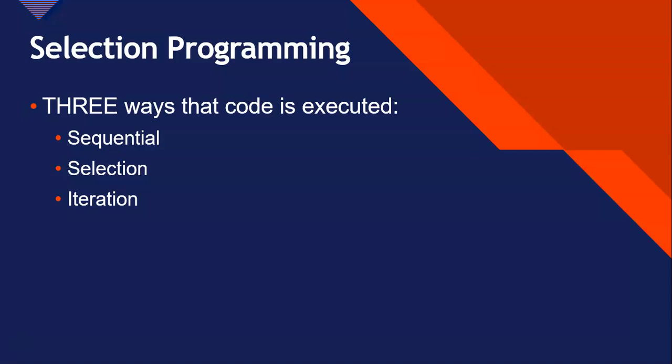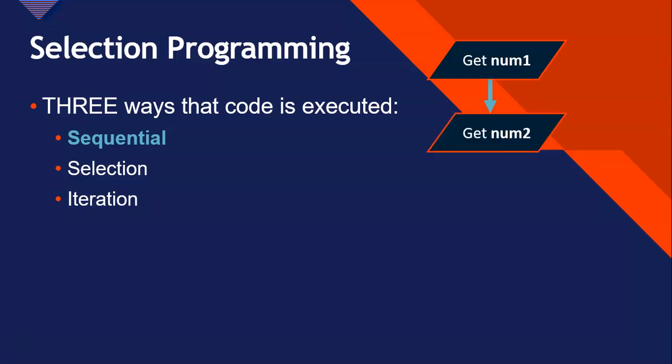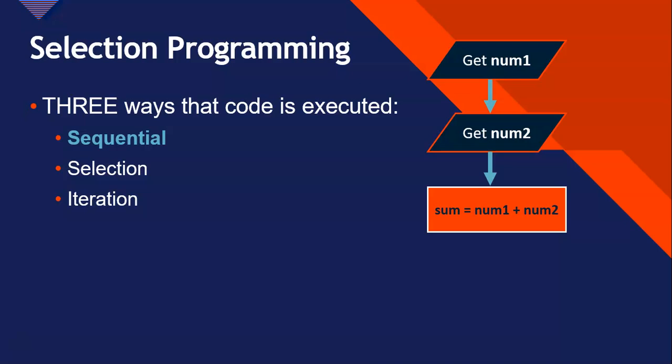So what is sequential programming? That's where code is executed one line after each other in the order that you put it. For example, you might get a particular number as input, then get a second number as input, and only once you've got those two values can you do the calculation and then display that answer. That is sequential programming.